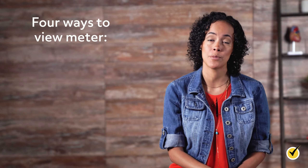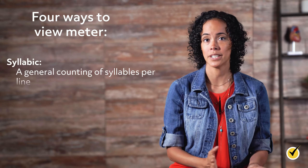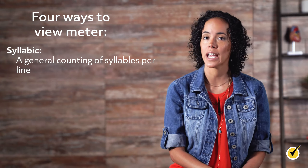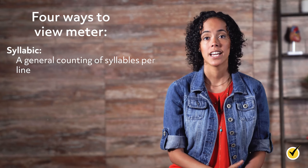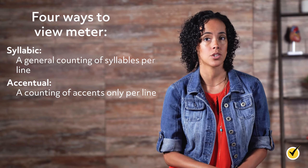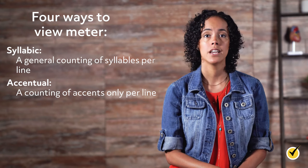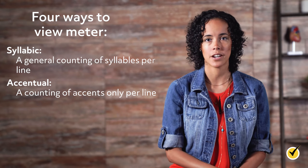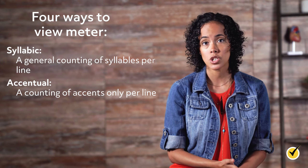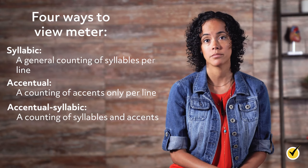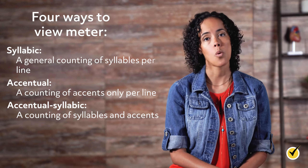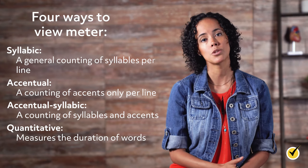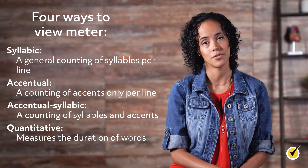According to the Purdue OWL, there are four common ways to view meter. Syllabic: a general counting of syllables per line. Accentual: a counting of accents only per line; syllables may vary between accents. Accentual-syllabic: a counting of both syllables and accents. And quantitative, which measures the duration of words.